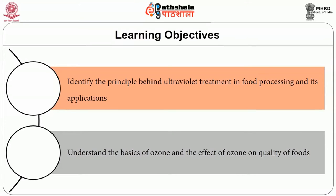Ultraviolet light and ozone treatment are non-thermal food processing methods that can produce safe food products while maintaining nutritional characteristics and minimizing loss of quality in terms of flavor and color. On completion of this module, you will be able to identify the principle behind ultraviolet treatment in food processing and its applications, and understand the basics of ozone and its effect on quality of foods.